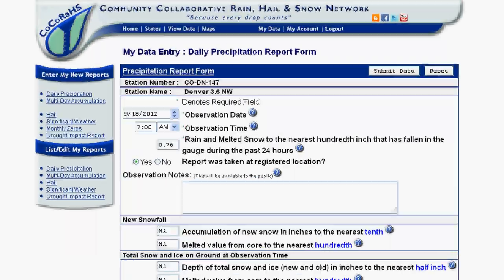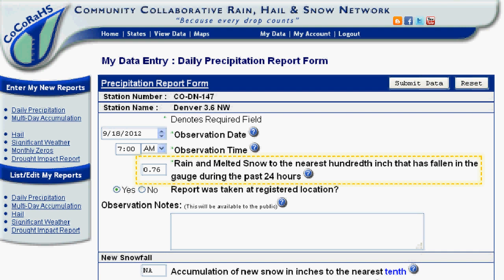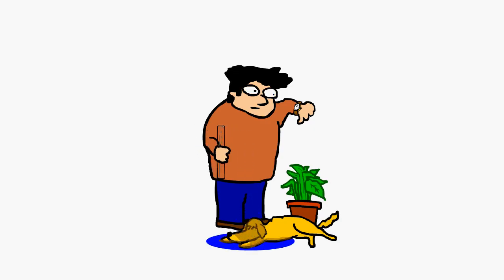Once you've got a measurement, record it in the report form in the field, Rain and Melted Snow to the nearest hundredth inch that has fallen in the gauge during the past 24 hours. Then empty your gauge and set it back outside.